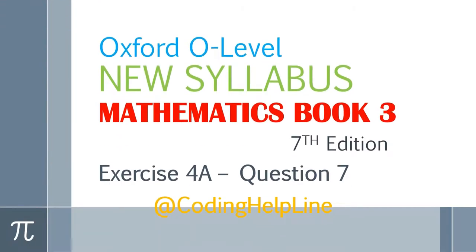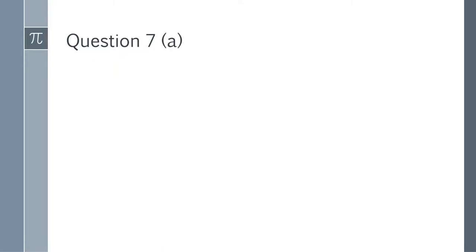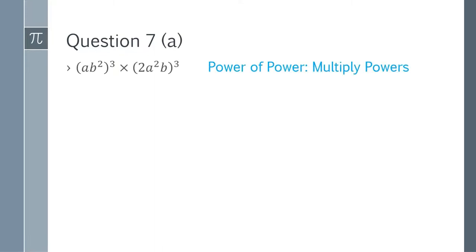Hello guys, welcome to my channel. In this video I am going to solve question 7 from exercise 4a, mathematics book 3, 7th edition. Question 7: simplify each of the following — it has four parts, a to d.